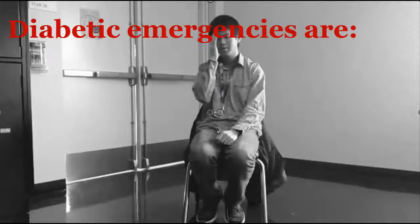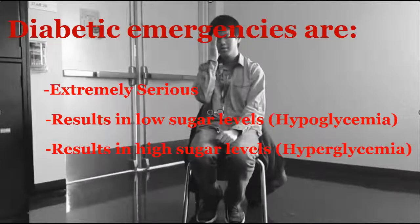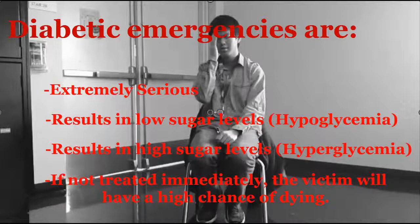Before giving the steps, here's a little background. Diabetic emergencies are extremely serious. They can result in low sugar levels, known as hypoglycemia, or high sugar levels, called hyperglycemia. If not treated immediately, the victim has a high chance of dying.